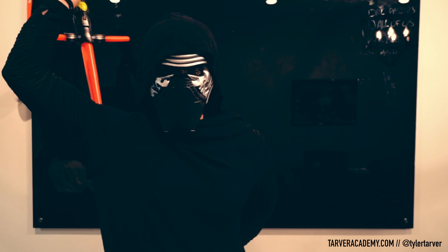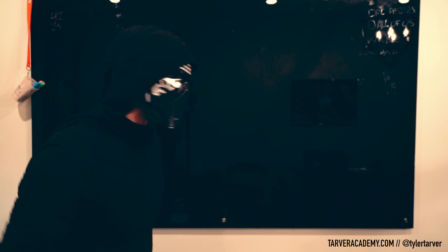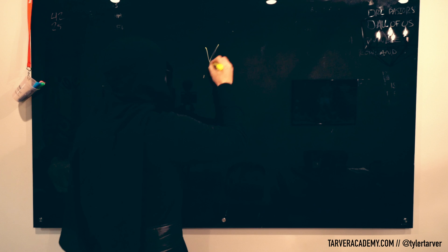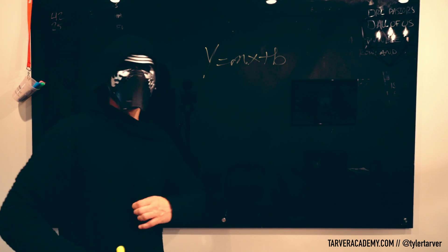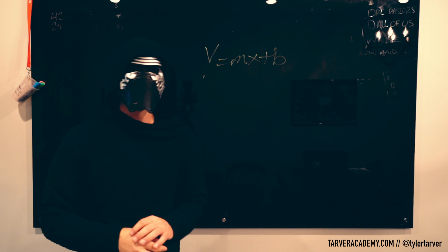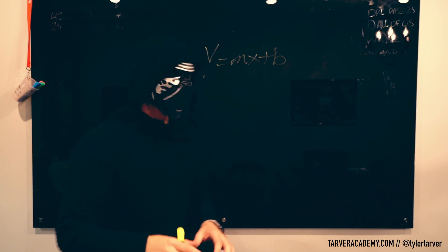We're going to learn about slope intercept form. So y equals mx plus b. You've heard this before, you've heard this phrase. Let's break it down and make it as simple as possible.